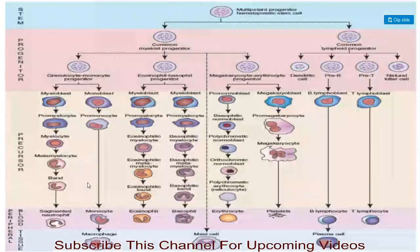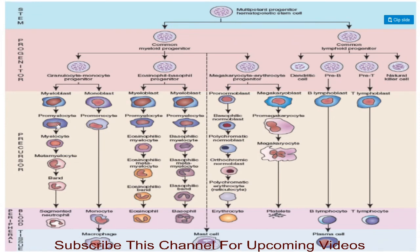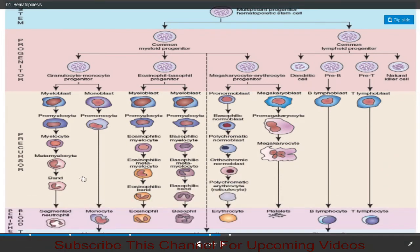This is the diagram of hematopoiesis. There is a common myeloid progenitor and a common lymphoid progenitor, both derived from hematopoietic stem cells. The common myeloid progenitor converts into granulocyte-monocyte progenitor, eosinophil-basophil progenitor, and megakaryocyte-erythrocyte progenitor. Precursor stages include promyelocyte, myelocyte, metamyelocyte, band cells, and finally segmented neutrophils.